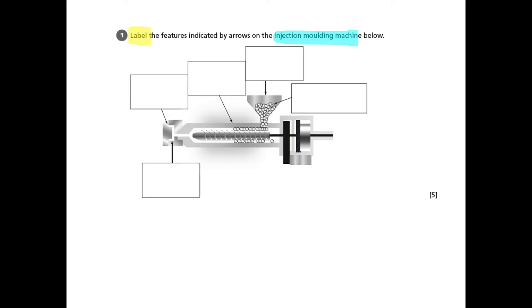There are five boxes and five marks, so we don't need to write too much. This should be relatively simple if you know your injection molding process. I'm going to start on the top left and work our way clockwise. We can see that the first item...